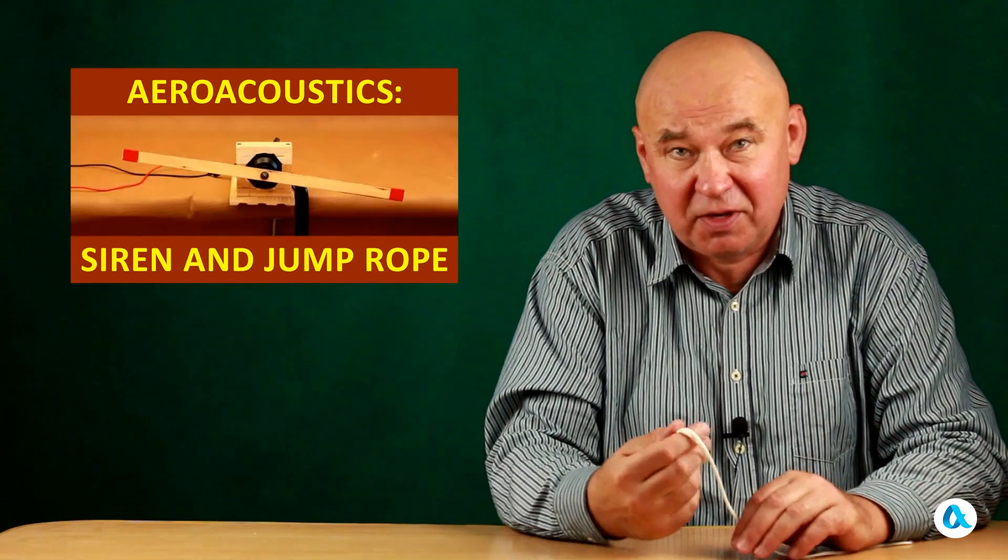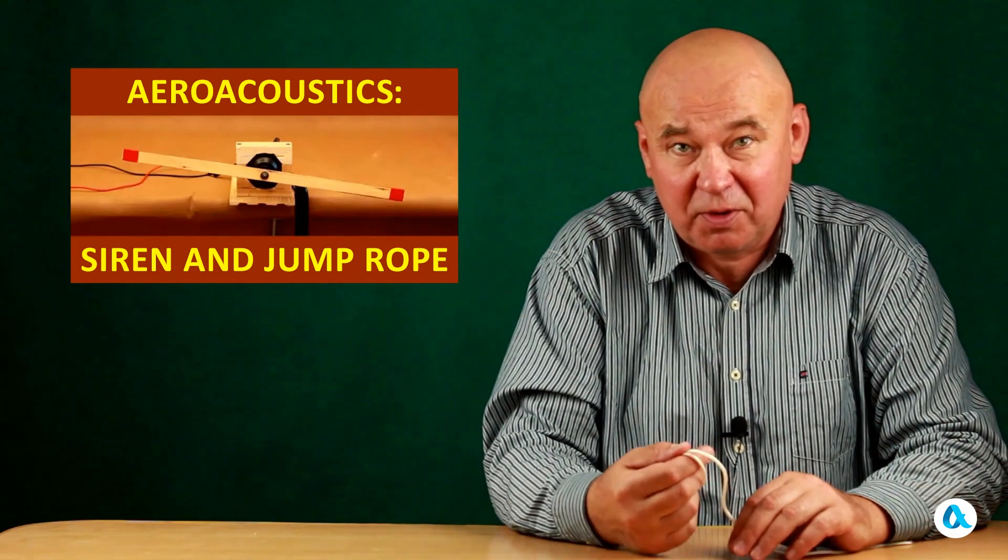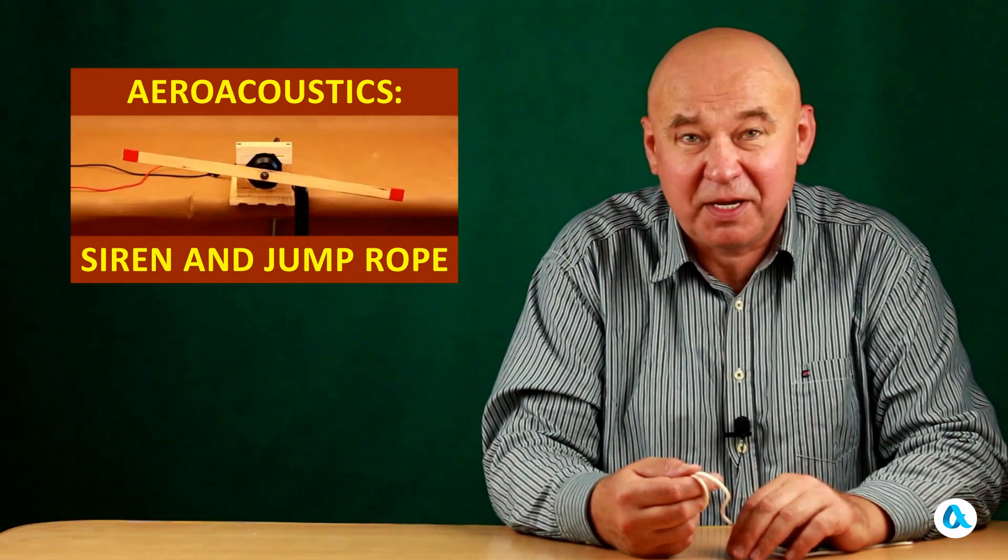By the way, such a vortex street also forms behind a rope or any other cord. If you spin it, vortices form behind it, and this shedding of vortices creates the resulting audible sound. We have a separate video about the formation of the Karman vortex street, and we recommend you watch it.